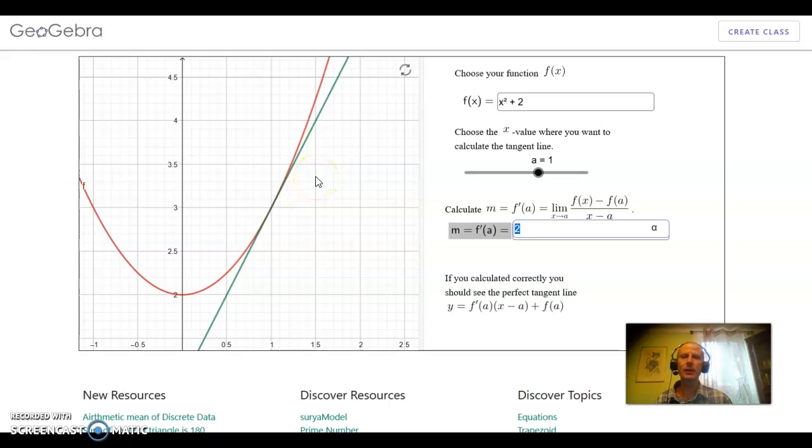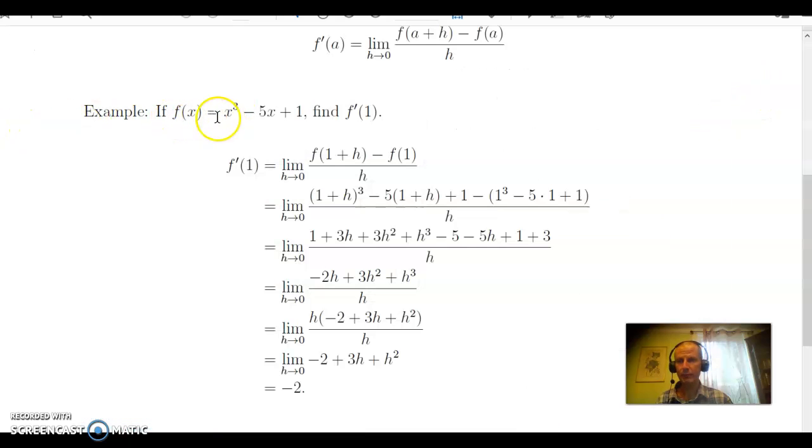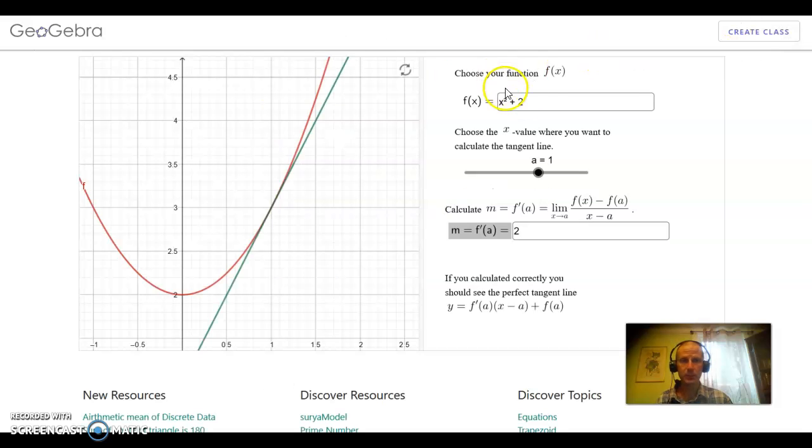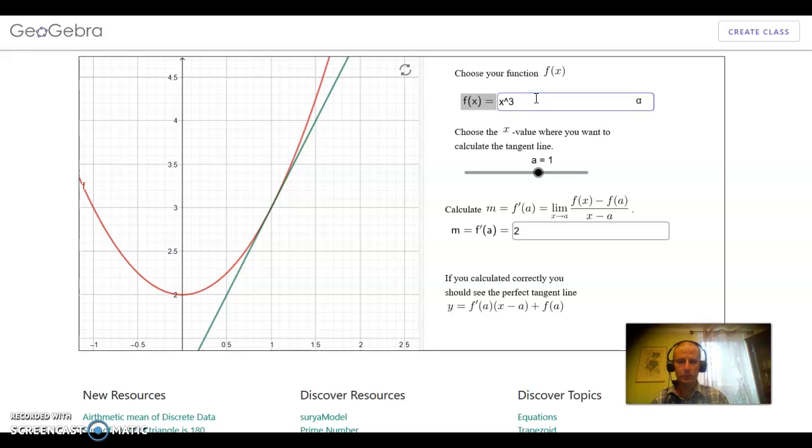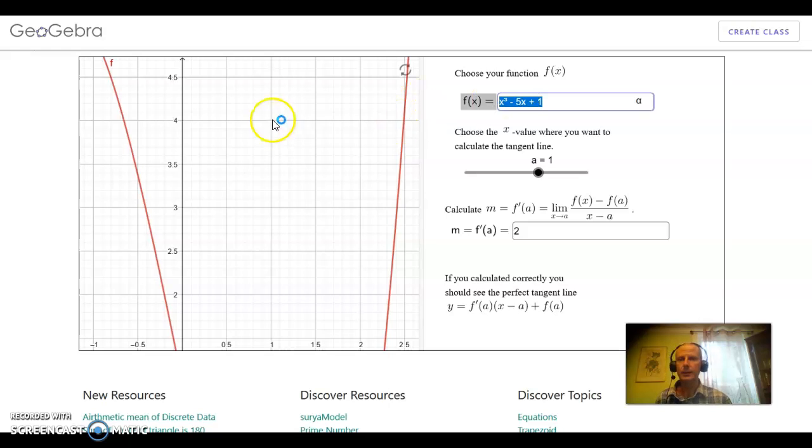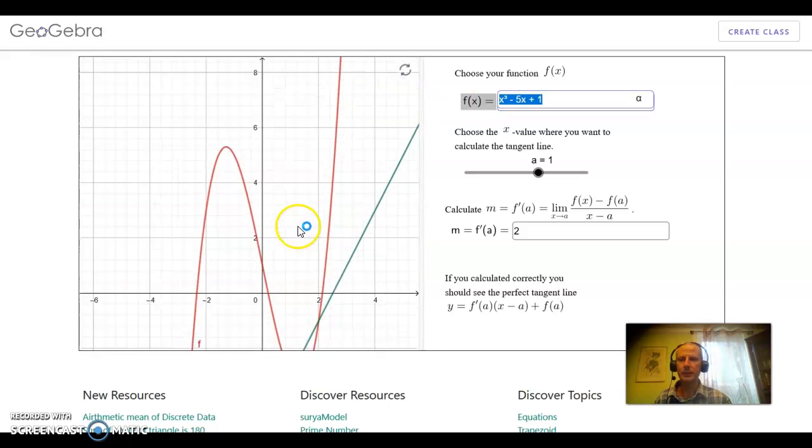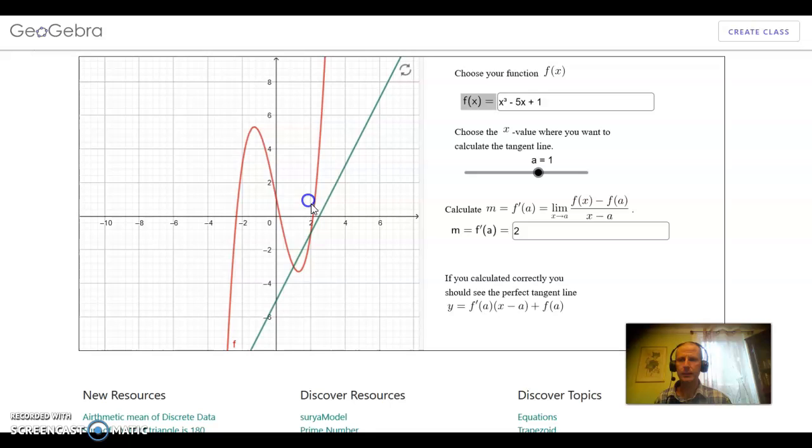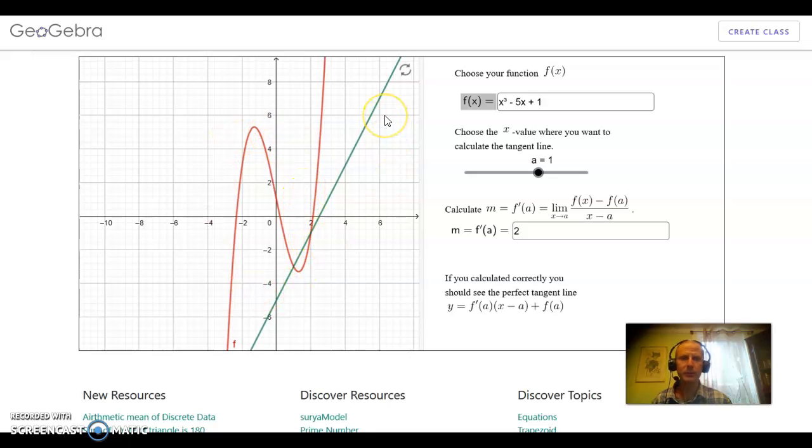In fact, we can see what happens when we try this on the problem from the previous example. In the previous example, we had f(x) equals x cubed minus 5x plus 1. So I will enter that: x cubed minus 5x plus 1. And the function will automatically update. And we get this nice curvy cubic function.